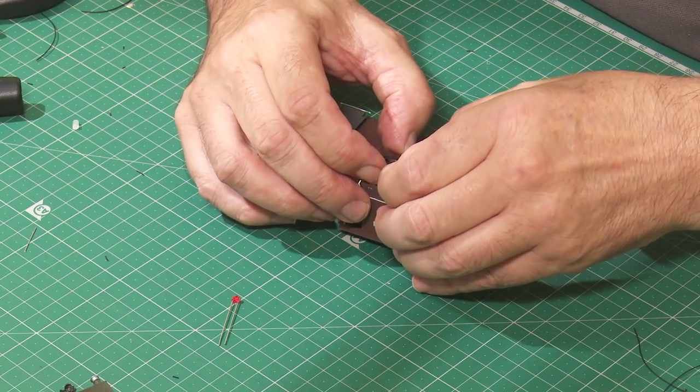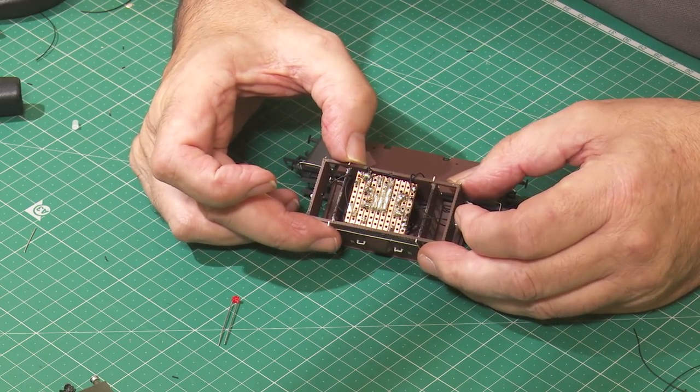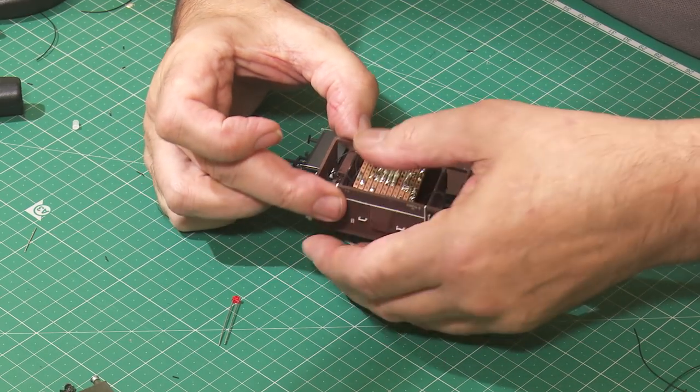Do make sure that all the cables are free and not jammed between the circuit board and the body. Once it's in place, you can push it down until it makes contact with the reed switches against the roof of the guards van.